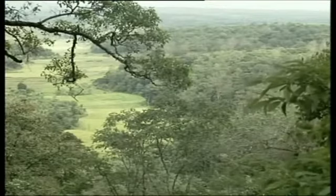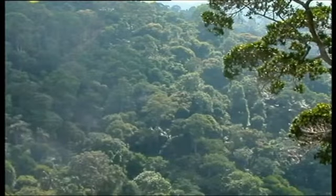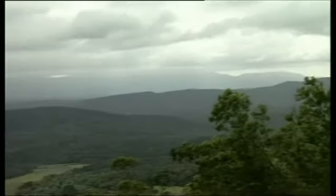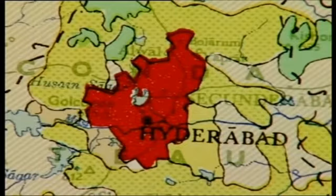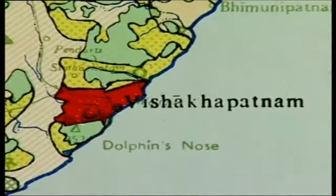The forest areas of this region include reserved, protected, and unclassed forests. Reserved forests are seen around the Eastern Ghats over a vast area in the northern parts and also in the Sri Sailam plateau in the southern part. Unclassed forests are seen in the northern parts. The non-agricultural lands include both urban and rural settlements. The major urban settlement areas are Hyderabad, Nizamabad, Warangal, Vijayawada, Guntur, Rajamundry, Kakinada, and Visakhapatnam.